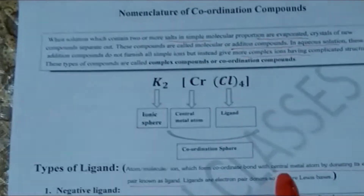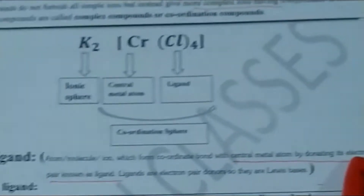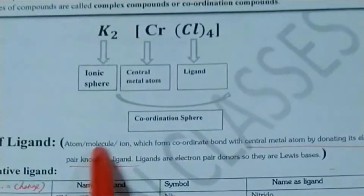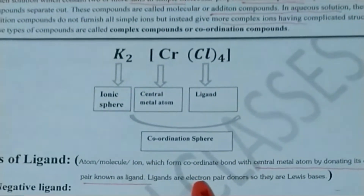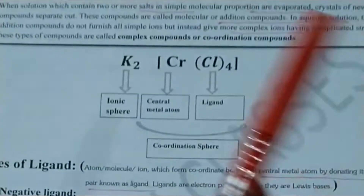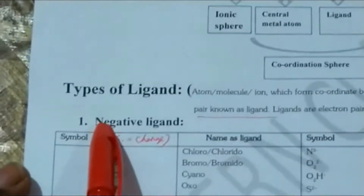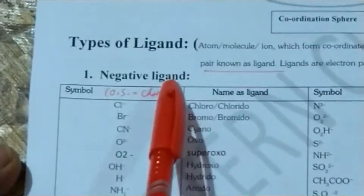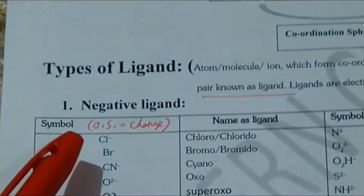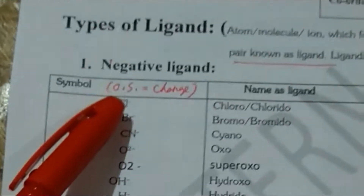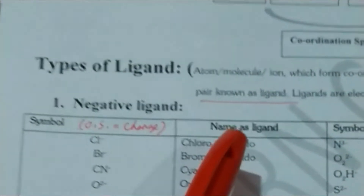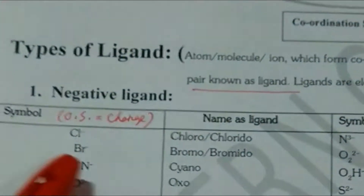Basically, ligands are the electron-pair-donating atoms, molecules, or ions which form coordinate bonds with the central metal atom. Now there are some types of ligands. Number one: negative ligands. If you have a close look — Cl⁻ is known as chloro or chlorido. In NCERT also we'll use chlorido.